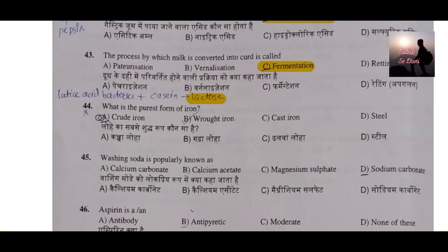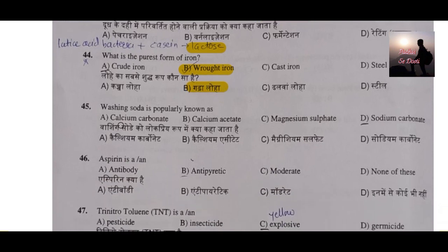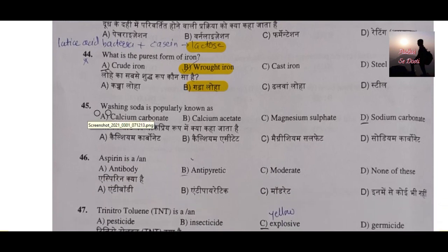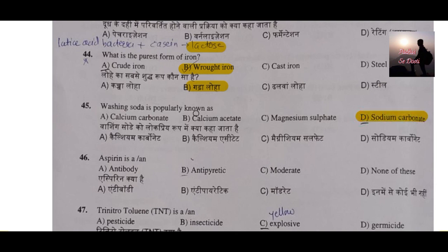Question number 44: What is the purest form of iron? The purest form of iron is wrought iron, known as gadha loha. Question number 45: Washing soda is popularly known as? It is called sodium carbonate. If it had asked about baking soda, the answer would be sodium bicarbonate. So remember: sodium bicarbonate is baking soda and sodium carbonate is washing soda.